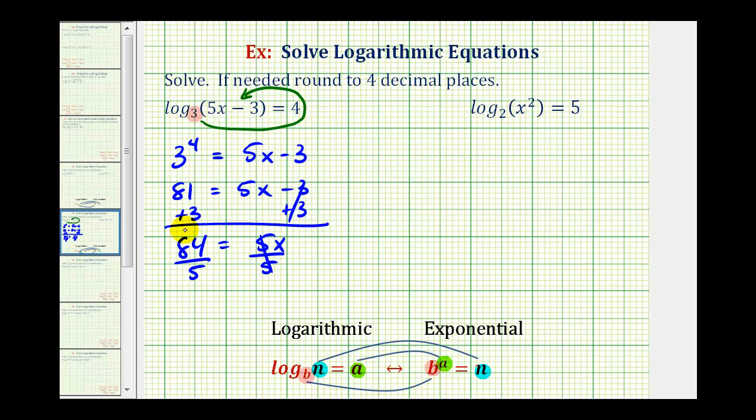Now we'll divide both sides by five. So we have x equals 84 fifths. This does not simplify. Let's switch the order here and say x equals 84 fifths.